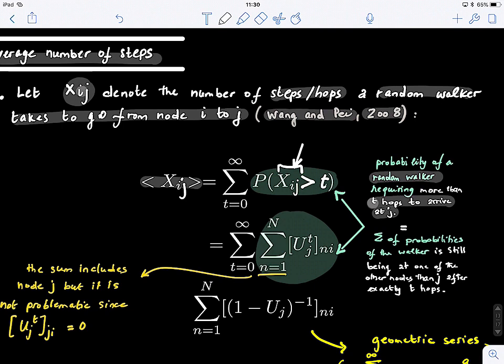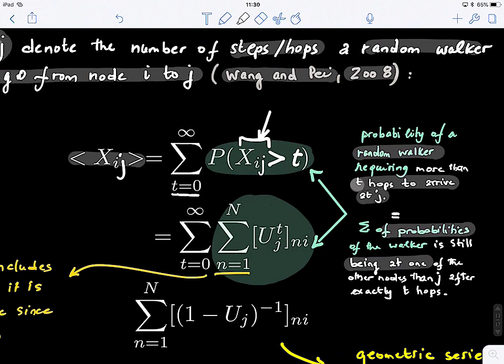So next, what we do, if we sum this, it means that we're looking at all the possible number of steps. So t is the number of hops, we're varying it from 0 to infinity. And then this happens to be exactly the sum of probabilities of the walker is still being at one node, at one of the other nodes than j after exactly t hops.